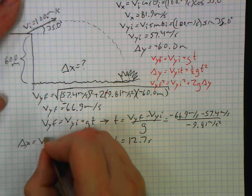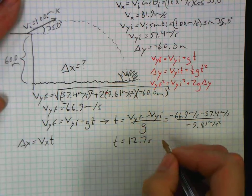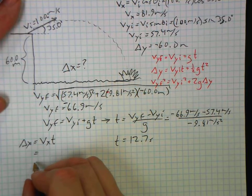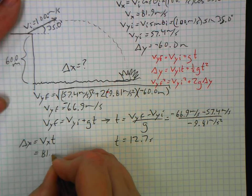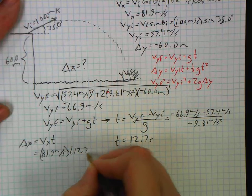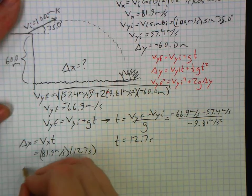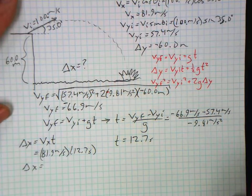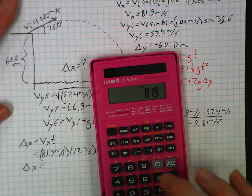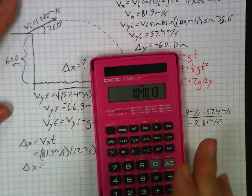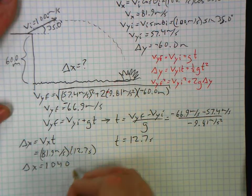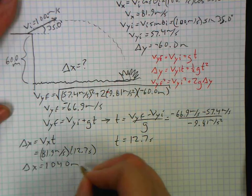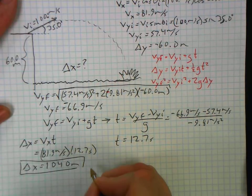So our delta x is going to be v sub x multiplied by time, which is equal to 81.9 meters per second multiplied by 12.7 seconds. Delta x: 81.9 times 12.7 is 1040 with three sig figs. And that's going to be meters, which was actually one of the answers—it was letter C on the practice test.